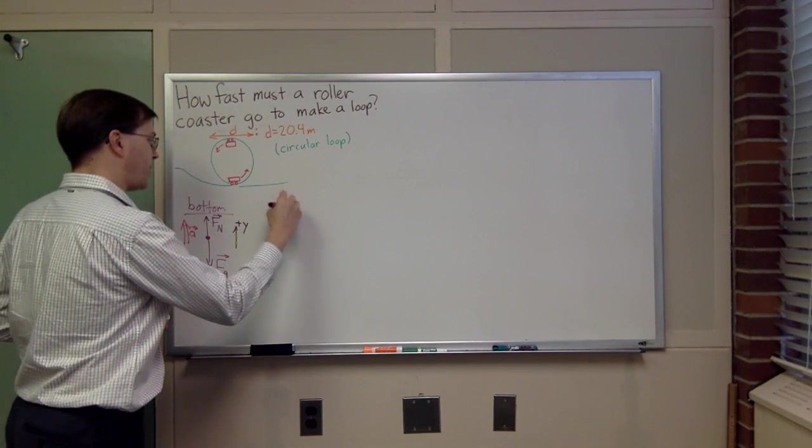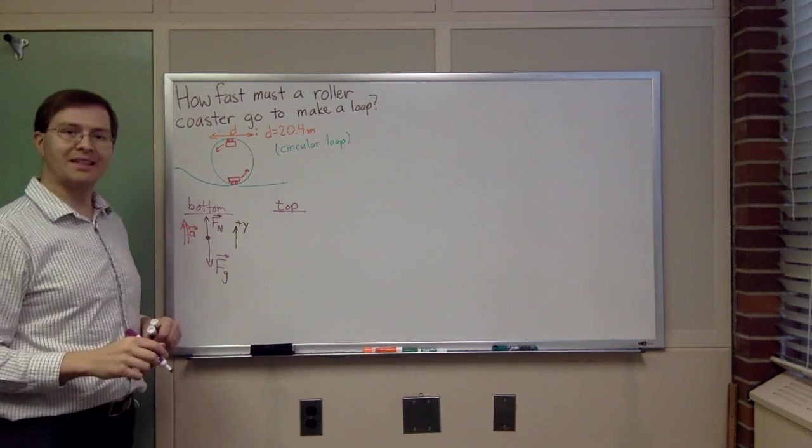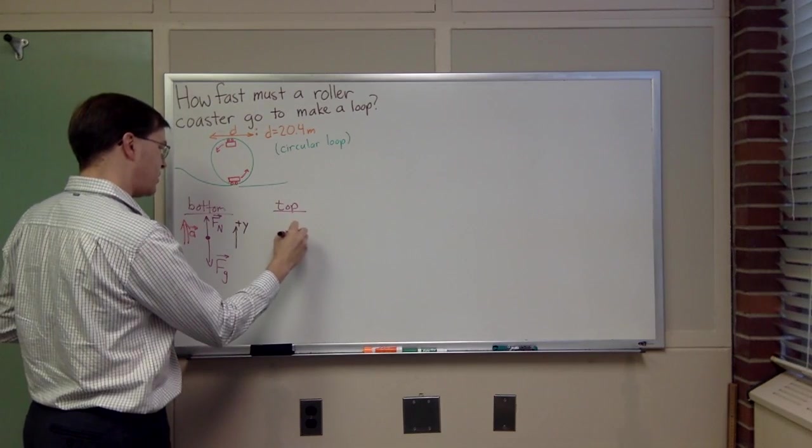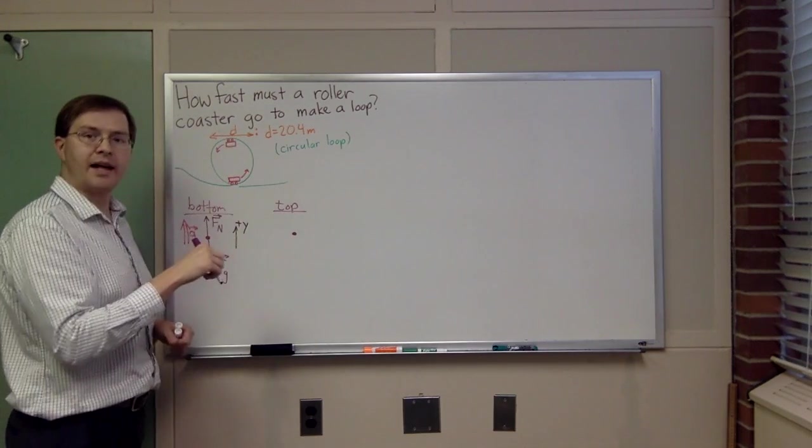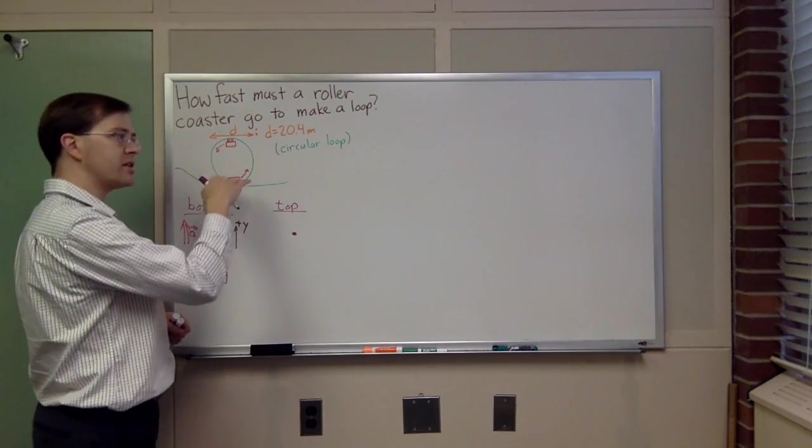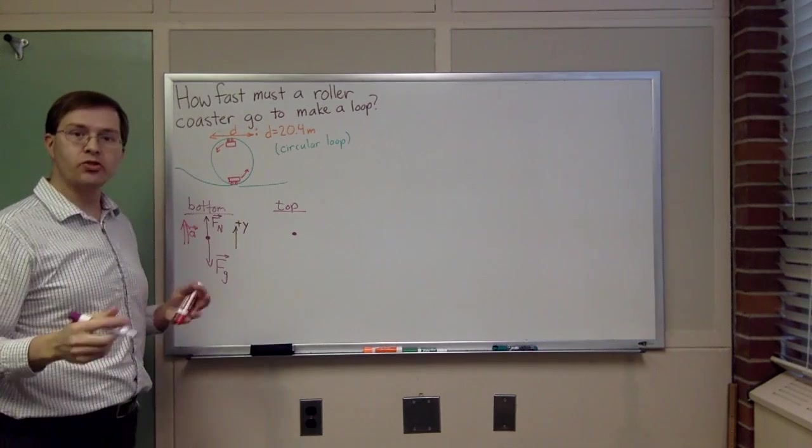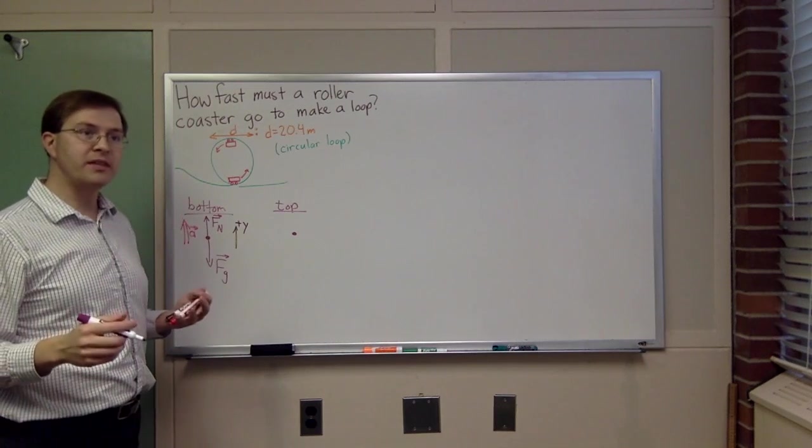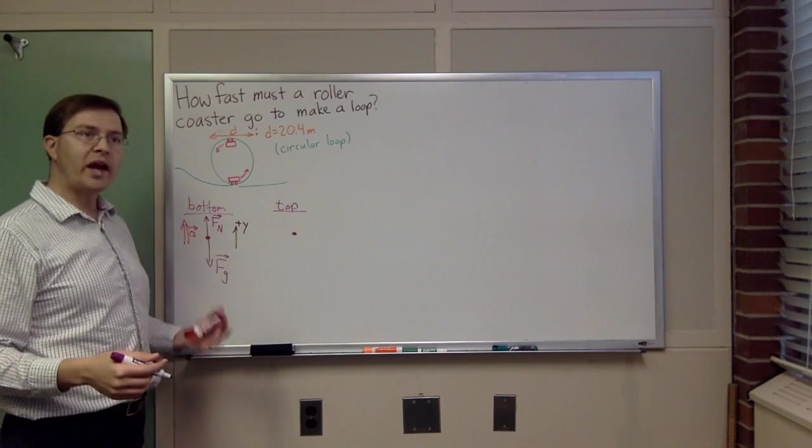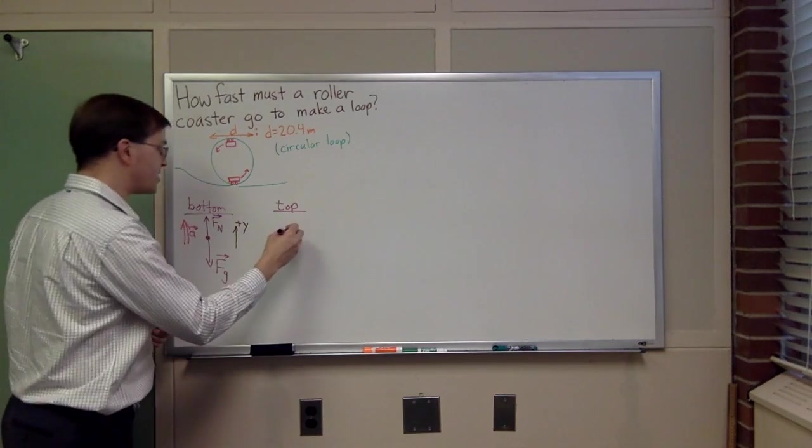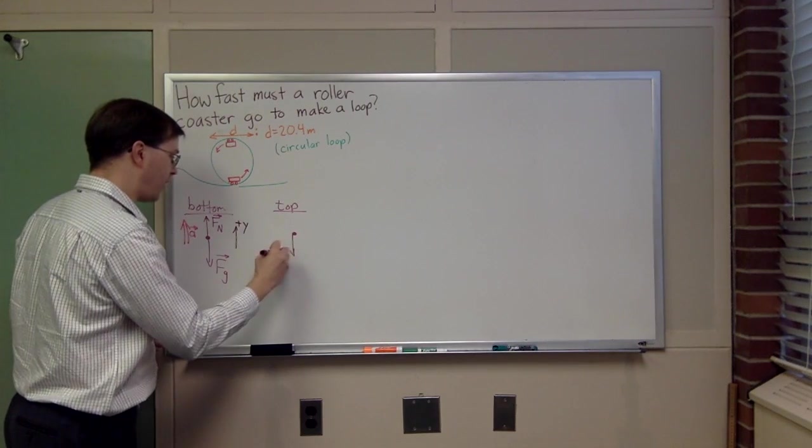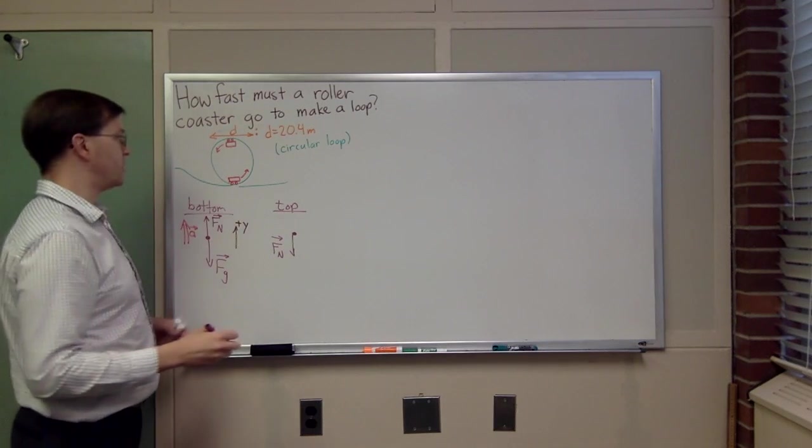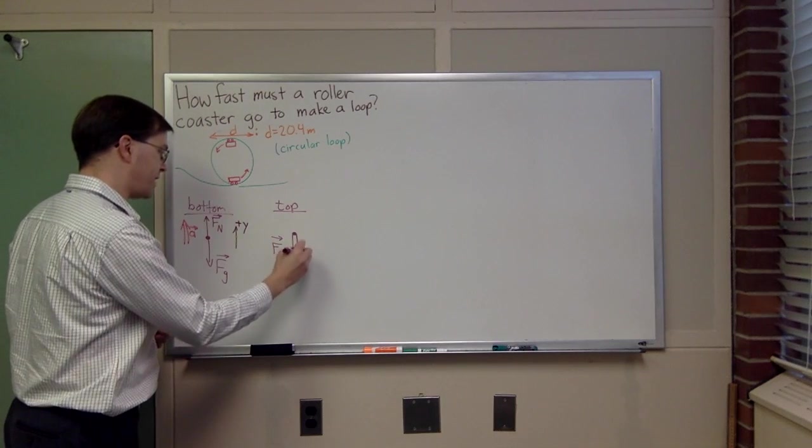Similarly, I can draw a free body diagram for this cart being at the top of the circle. At this position, I have, again, one contact point or set of contact points between the cart and the track. And as usual, that means there's a normal force. Normal forces are always directed perpendicular to the surface, normal to the surface, and away from the surface. For us, that means the normal force points down. The normal force has to point down at that position. Long range force of gravity also points down.